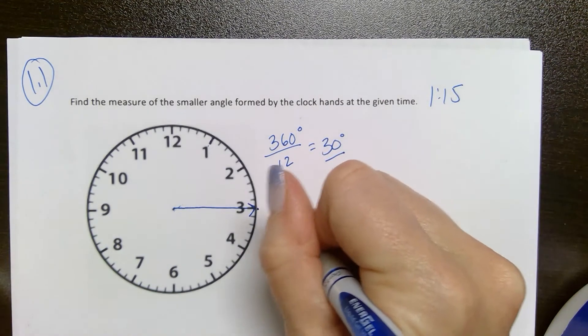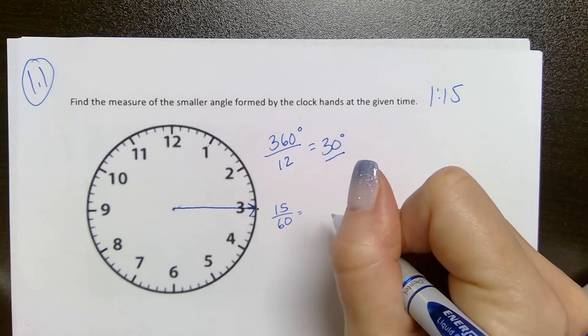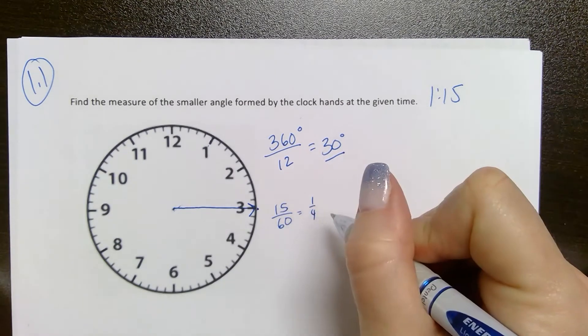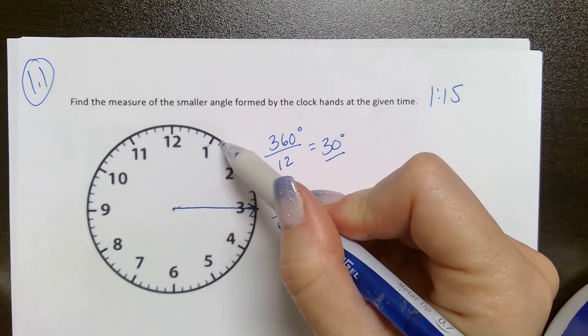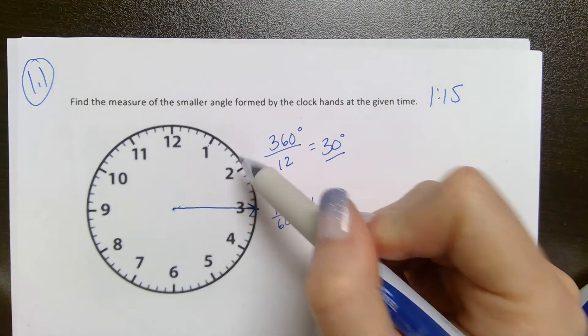Well, 15 minutes is 15 out of 60 minutes in an hour. So that's a fourth of an hour. So my hour hand has moved a fourth of the way from 1 to 2.